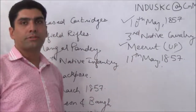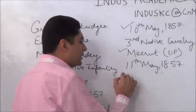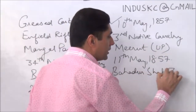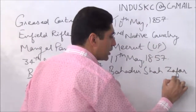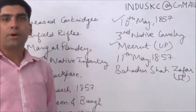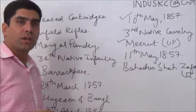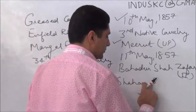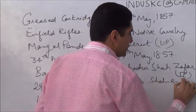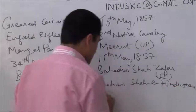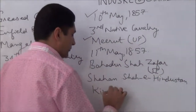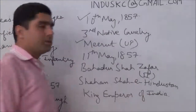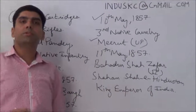On 11th May 1857, these sepoys reached Delhi. They declared Bahadur Shah Zafar — also known as Bahadur Shah II — as Shahenshah-e-Hindustan, that is, the King Emperor of India. They decided that under his leadership they would raise the revolt.